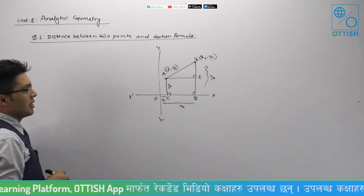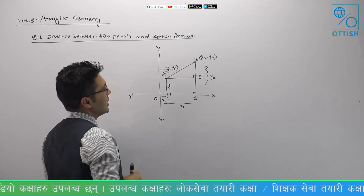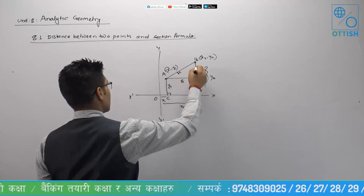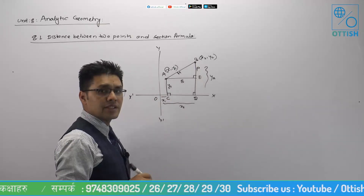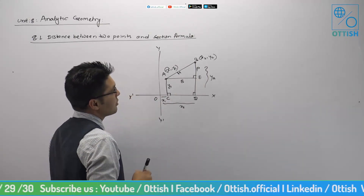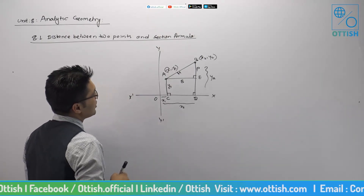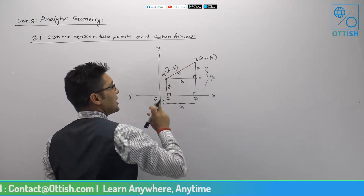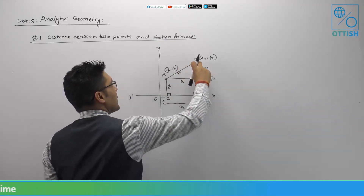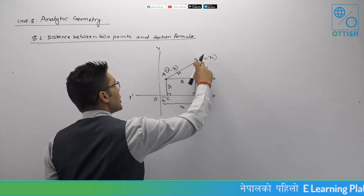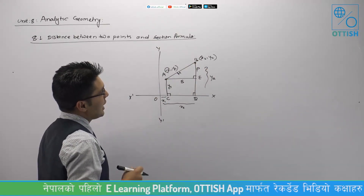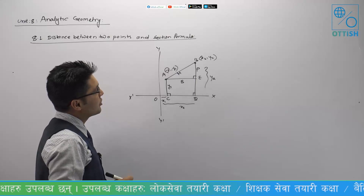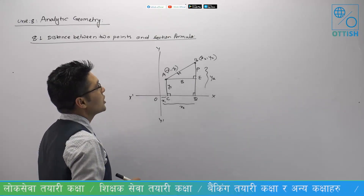A, E, B form a right angle triangle. A right angle triangle has a hypotenuse, base, and perpendicular. H squared is equal to P squared plus B squared. So, if I ask for the distance formula, I will apply the Pythagorean theorem.